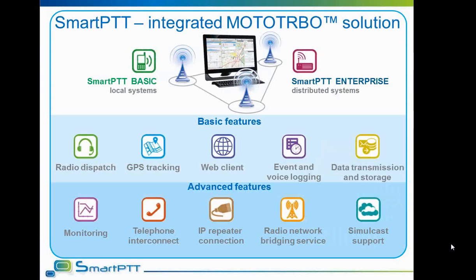In case someone is unfamiliar with our software, I will tell you shortly about its general features. SmartPTT comes in two variants. SmartPTT Basic is a solution for small local radio networks where a control station is used to dispatch the system. SmartPTT Enterprise allows dispatch and control over complex Motorola MotoTURBO networks such as IP Site Connect, Capacity Plus, Link Capacity Plus, and Connect Plus.